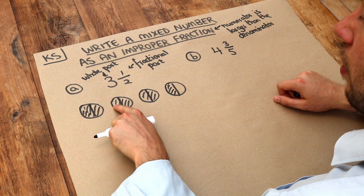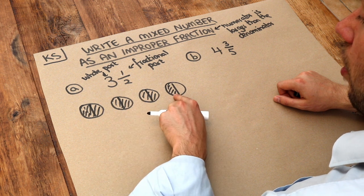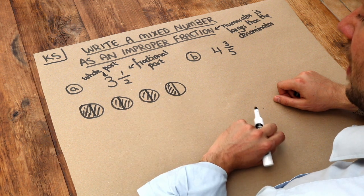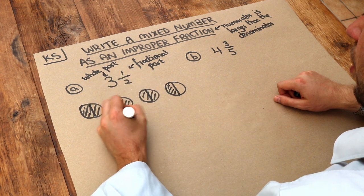Well we've got one, two, three, four, five, six, seven halves of a pizza. So we can see therefore that three and a half is the same as seven over two.